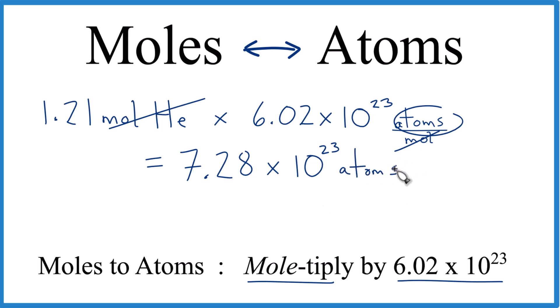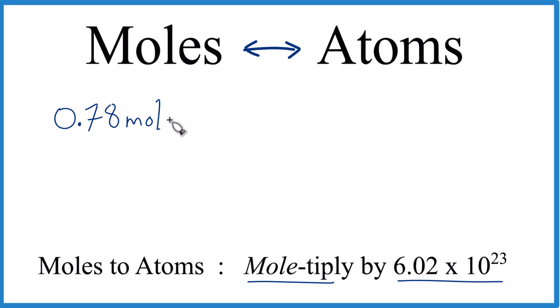That's how you do it. So pause and give this one a try. And remember, Avogadro's number is 6.02 times 10 to the 23rd atoms in one mole. Let's convert 0.78 moles of iron. And it really doesn't matter what we're converting. We're going to get the same answer. But let's say iron atoms here. So how do you get these moles to atoms? Pause and give it a try.